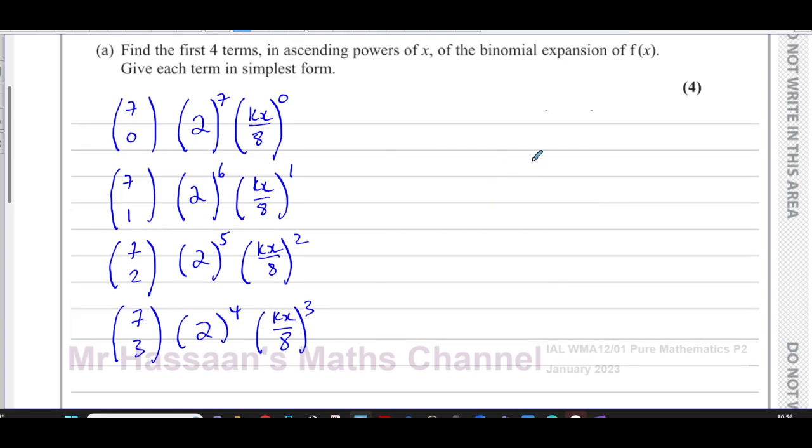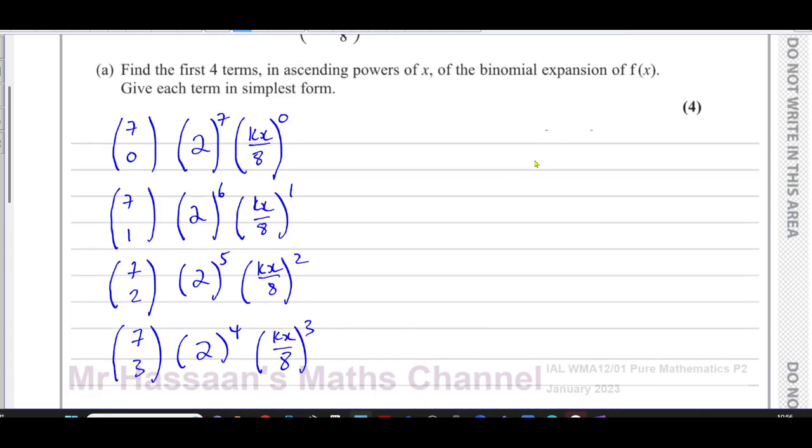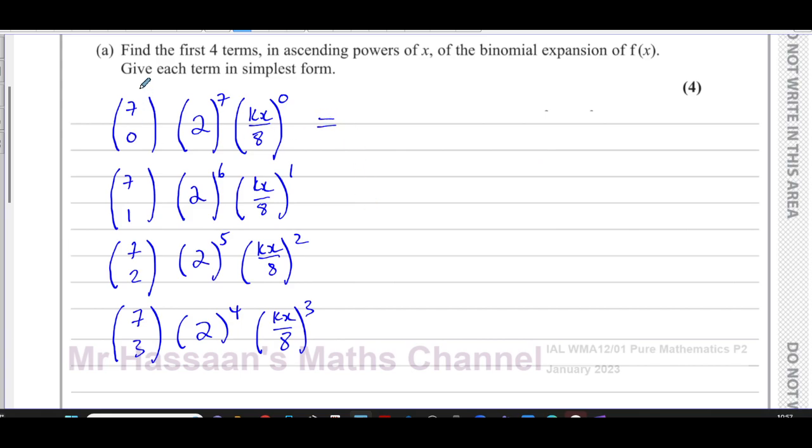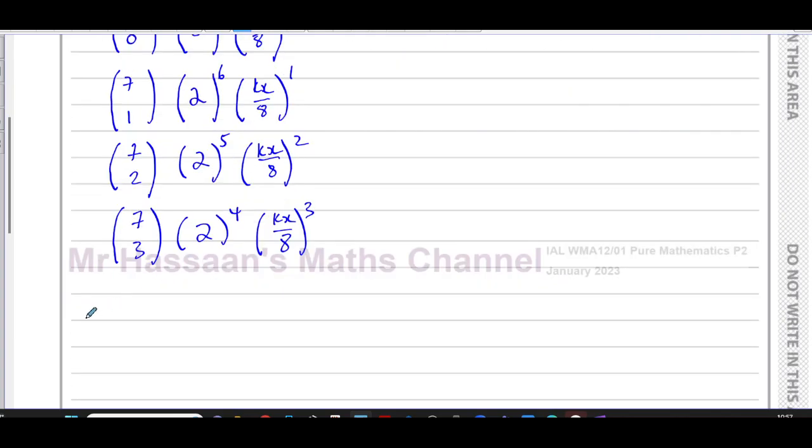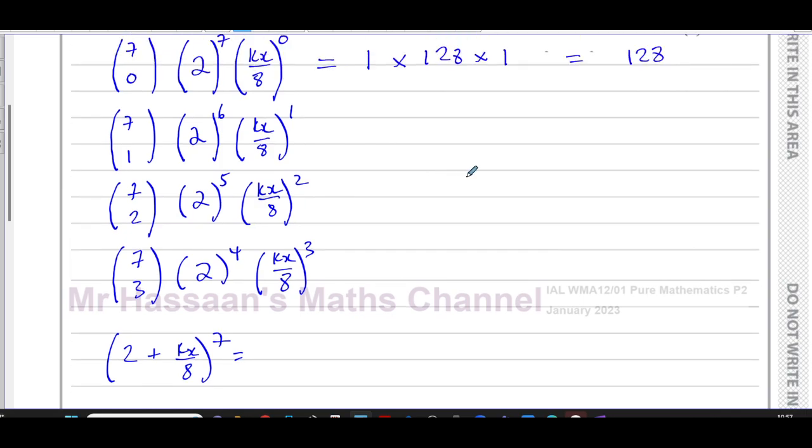So now we can work out what the actual values of each of these are. 7c0 is going to give you one. Two to the power of seven is going to be 128. And you've got kx over eight all to the power of zero, anything to the power of zero is equal to one. So the first term is 128. So we can say that two plus kx over eight to the power of seven equals 128, that's the first term of the expansion plus,